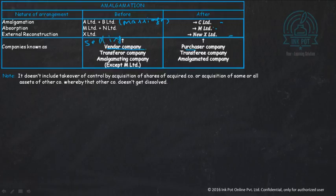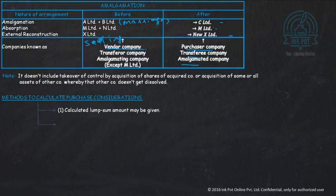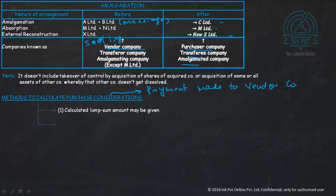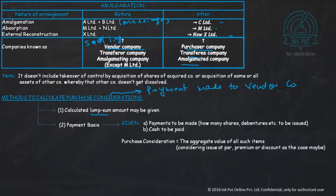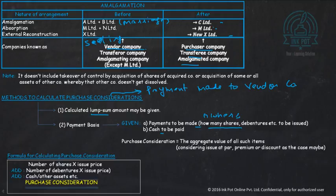Purchase consideration is the payment made to vendor companies. There are mainly two methods to calculate it: number one is the lump sum method, where a lump sum amount is given; number two is the net payment method, which includes whatever payment is made to the owners — the shareholders. The formula is: Purchase Consideration = (Number of shares × price) + (Number of debentures × price) + Cash, where the new company is the acquirer.